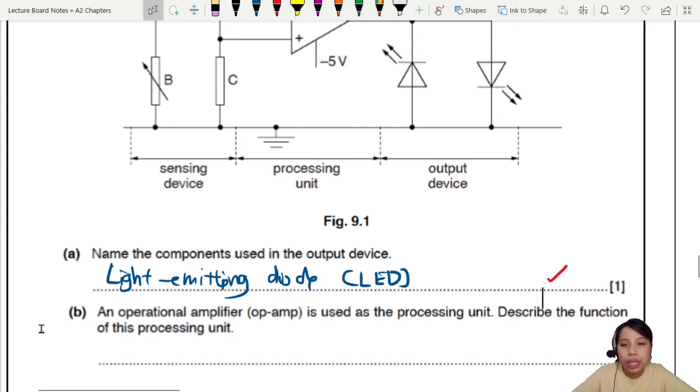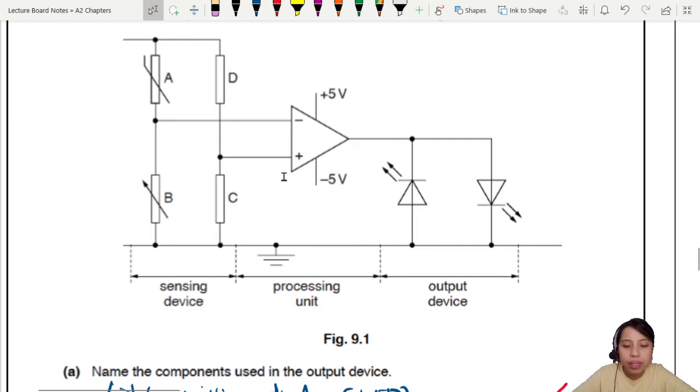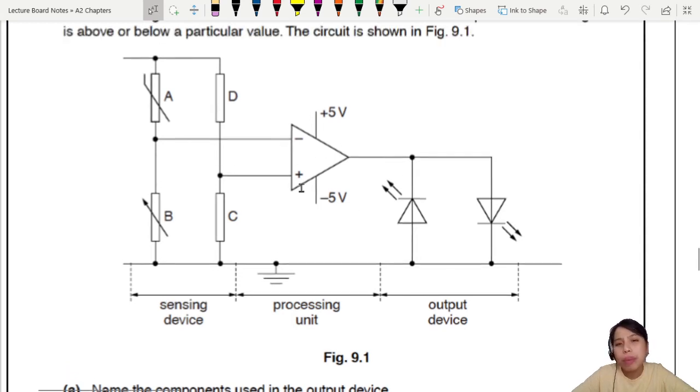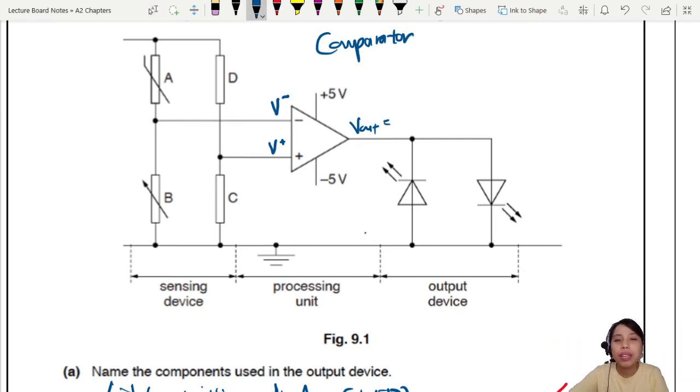An op-amp is used as a processing unit. Describe the function of this processing unit. Two marks. Why do we have this op-amp here in the first place? What kind of op-amp circuit is this? This looks like a comparator circuit. This op-amp is set up in such a way to compare between the voltage of V minus and V plus and see which one is bigger. Then it will send a V out.